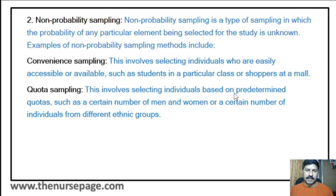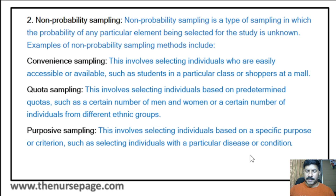Another type of non-probability sampling is purposive sampling. Purposive sampling involves selecting individuals based on a specific purpose or criterion, such as individuals with a particular disease or condition. Only those having that particular condition will be selected. These are the examples of non-probability sampling: convenience, quota, and purposive sampling.